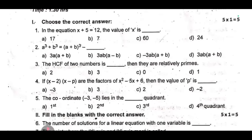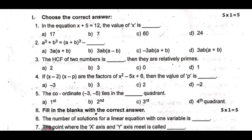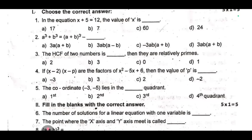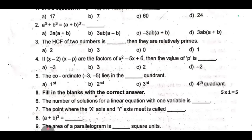You will see the answer. Choose the answer. Question 1: In the equation x + 5 = 12, the value of x is dash. Second one, a³ + b³ equals (a + b)³ minus dash. Third one, the HCF of two numbers is dash, then they are relatively primes.